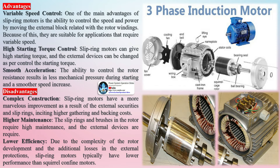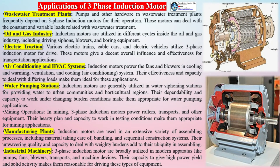Disadvantages of slip ring motors include complex construction due to the external resistances and slip rings, leading to higher assembly and maintenance costs. The slip rings and brushes in the rotor require high maintenance, and the external devices are an additional requirement. Due to the complexity of the rotor construction and additional losses in the external resistances, slip ring motors typically have lower efficiency than squirrel cage motors.